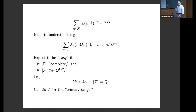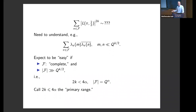A heuristic we've seen in many talks at this conference: if you want to study the 2K-th moment, you need to understand sums you get by opening the approximate functional equation. You can do that most easily if the family is reasonably complete, you have nice trace formulas, there are sufficiently many harmonics, and the family is bigger than the range of parameters you are considering.